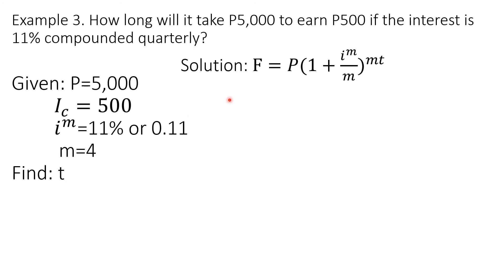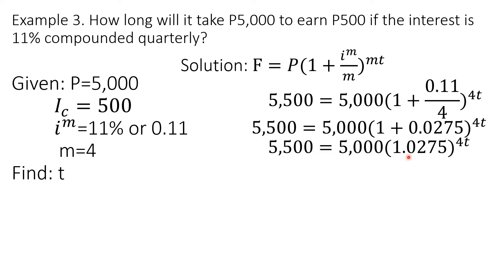Since this involves compound interest, we will be using this equation. By substitution, F is 5,500. We know that the future value is P, the principal amount, plus the compound interest, so 5,000 plus 500 is 5,500. This equals 5,000 times the quantity 1 plus 0.11 over 4, raised to the exponent 4 times T. We may simplify the expression inside the grouping symbol. So 0.11 divided by 4 is 0.0275, plus 1, that is 1.0275, raised to the 4T.